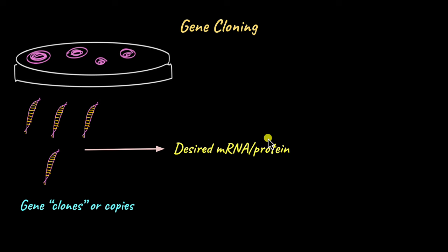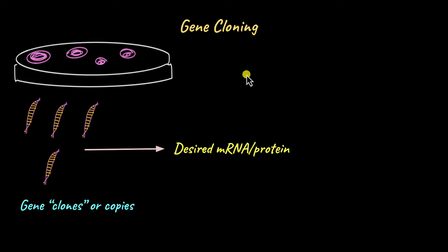In terms of proteins, gene cloning is used to produce many desired proteins — like insulin — at a large scale. So this is all about gene cloning, where we use a vector to produce multiple copies or clones of a desired gene.